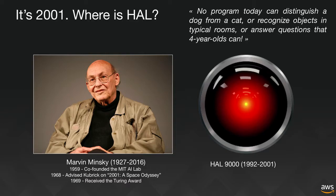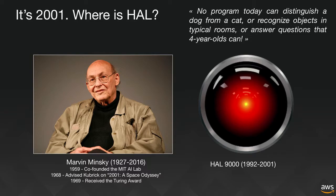Fast forwarding to 2001, Marvin Minsky wrote an article saying 'It's 2001, where is HAL?' — HAL being the murderous artificial intelligence in Stanley Kubrick's movie 2001: A Space Odyssey. Funny enough, Minsky actually helped Kubrick design what HAL would look like. So it's ironic that 20 or so years later, Minsky was frustrated that what Kubrick filmed was still not available in real life. In his article he says something striking: 'No program today can distinguish a dog from a cat or recognize objects in typical rooms or answer questions that four-year-olds can.'